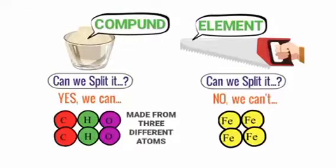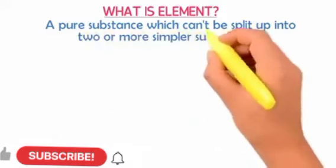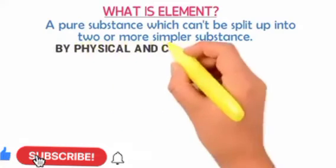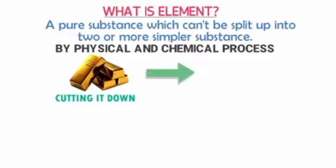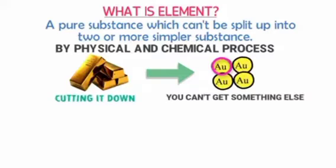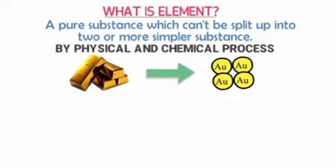What is an element? An element is a pure substance which cannot be split into two or more simpler substances by either a physical or chemical process. Look at gold — even if we cut it down, we shall still get gold. You cannot get something else. We cannot split it up by either physical or chemical processes.